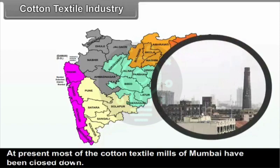C. Aurangabad Division — In Marathwada region, Nandur, Aurangabad and Jalna are the centres of cotton textile mills. Cloth from Nandur is well known. D. Pune Division — In western Maharashtra region, Kolhapur, Ichalkaranji of Kolhapur district, Sangli, Miraj and Madhavnagar of Sangli district are well known centres of cotton textile mills. Solapur and Barshi of Solapur district also have cotton textile mills. Apart from the above, Thane and Pune districts also have a few cotton textile centres.